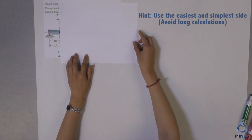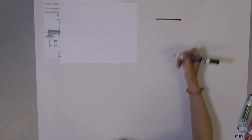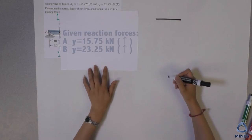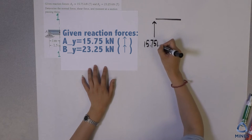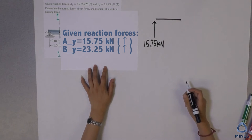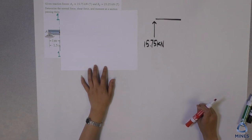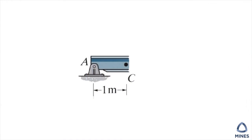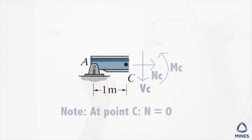Obviously pick the simple and easy one. So what you are going to do is try to redraw the FBD you see here. The reaction force at A is given as 1575 kN going up. And then we are going to have three internal forces. Since we don't have a horizontal load, we are going to have a shear force and bending moment at location C.